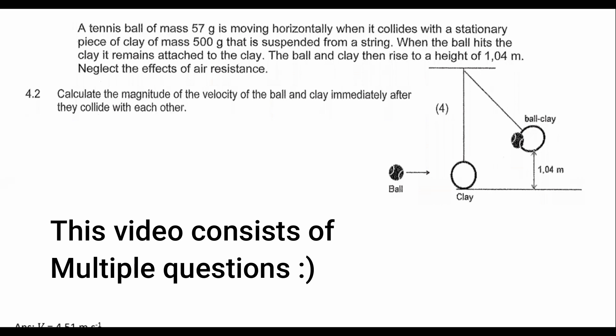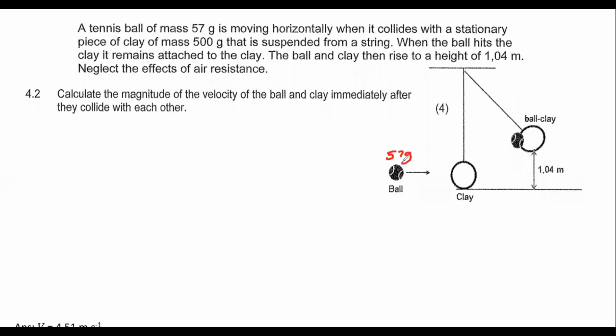In this question, we have a tennis ball of 57 grams moving horizontally when it collides with a stationary piece of clay of mass 500 grams that is suspended from a string. When the ball hits the clay, it remains attached. The ball and clay then rise to a height of 1.04 meters.